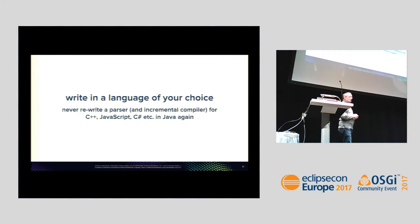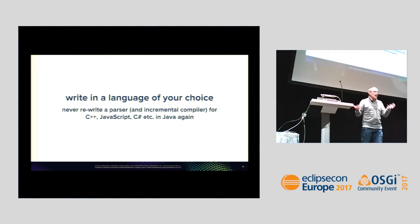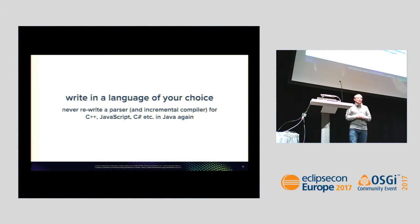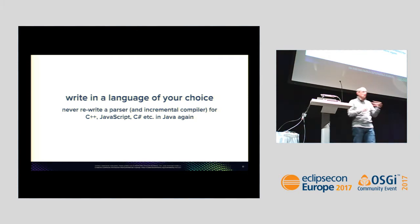The second benefit is you can build language servers in the language of your choice, because it's a separate process. The client has no idea how you built it internally — whether you used JavaScript, Python, Java, Go, or whatever. That sounds okay, but consider this: if you want to build a C++ and C# parser, you'd have to rewrite it in Java just to plug it into Eclipse, even though it already exists in Clang.